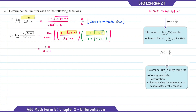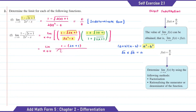The conjugate for the numerator will be 1 plus square root of 2x plus 1 over 1 plus square root of 2x plus 1. When we expand the numerator, just like expanding (a plus b)(a minus b) to get a squared minus b squared, we get 1 squared minus (2x plus 1). For 2x squared minus x, we can factorize it with a common factor of x.